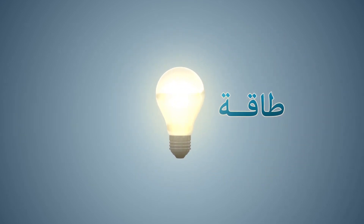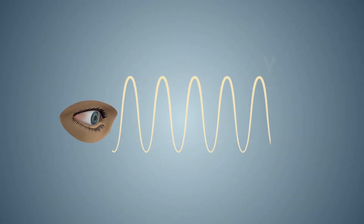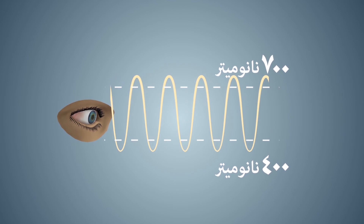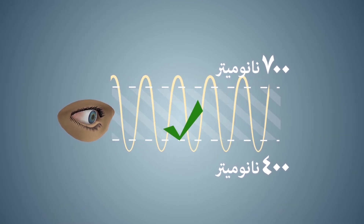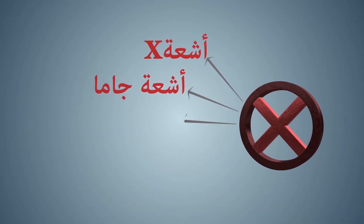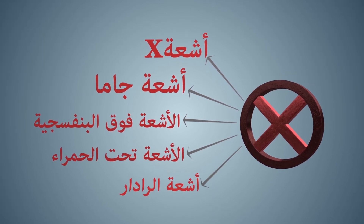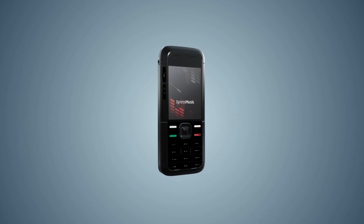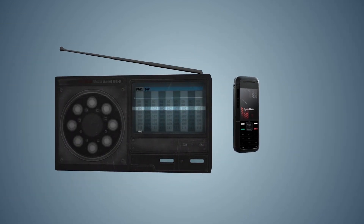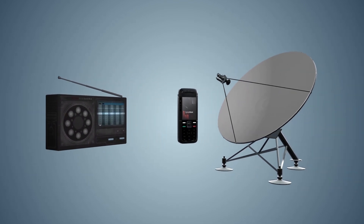العلم يكشف أن الضوء شكل من أشكال الطاقة وهو جزء من الموجات الكهرومغناطيسية، والعين ترى الموجات التي تتراوح ما بين 400 و700 نانوميتر فقط، ولا ترى الموجات الأخرى كأشعة إكس وأشعة جاما والأشعة فوق البنفسجية وتحت الحمراء وأشعة الرادار — رغم أن لها تطبيقات واسعة في حياتنا. فسبحان من أقسم بما نبصر وبما لا نبصر.